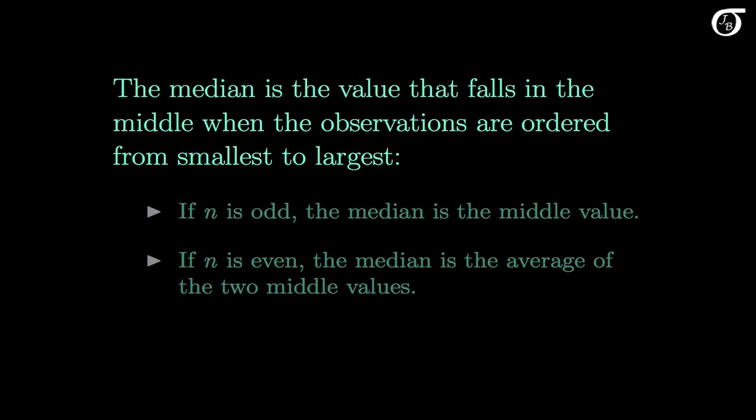The median is the value that falls in the middle when the observations are ordered from smallest to largest. If n is odd, there will be one value in the middle, and the median is that middle value.